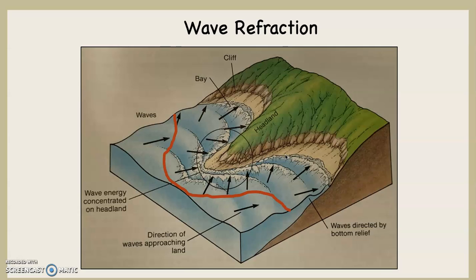What's going to happen is this: as a wave is coming towards the coastline, because the offshore environment where the depth equals one half of one wavelength reflects the onshore environment, the wave is going to reach a depth equal to one half of one wavelength at different places. Therefore, the first place where the wave reaches that depth will result in the wave slowing down there and there alone.